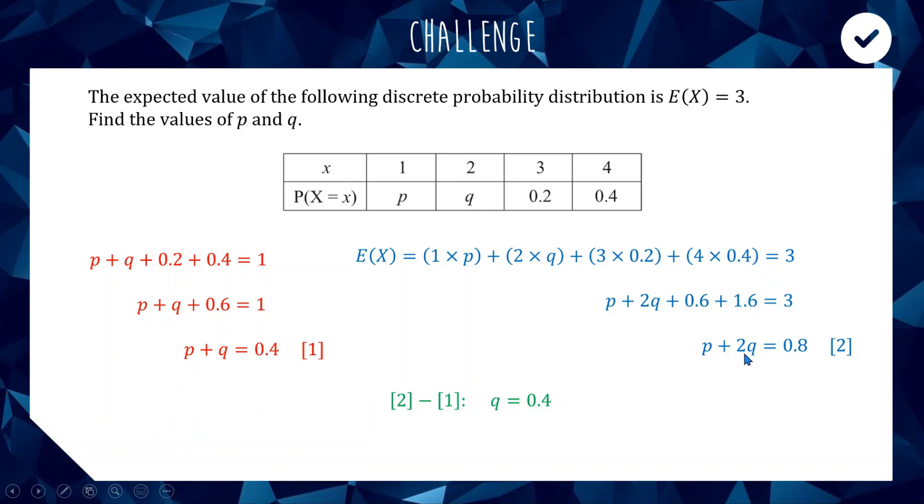Now we'll solve equations 1 and 2 simultaneously. Doing equation 2 minus equation 1, the p's cancel out and 2q minus q equals q. On the right hand side, 0.8 minus 0.4 equals 0.4, so q equals 0.4. Substituting that into our equations, we get p plus 0.4 equals 0.4, so p must be zero. The probability of 1 is zero. There's our values of p and q.